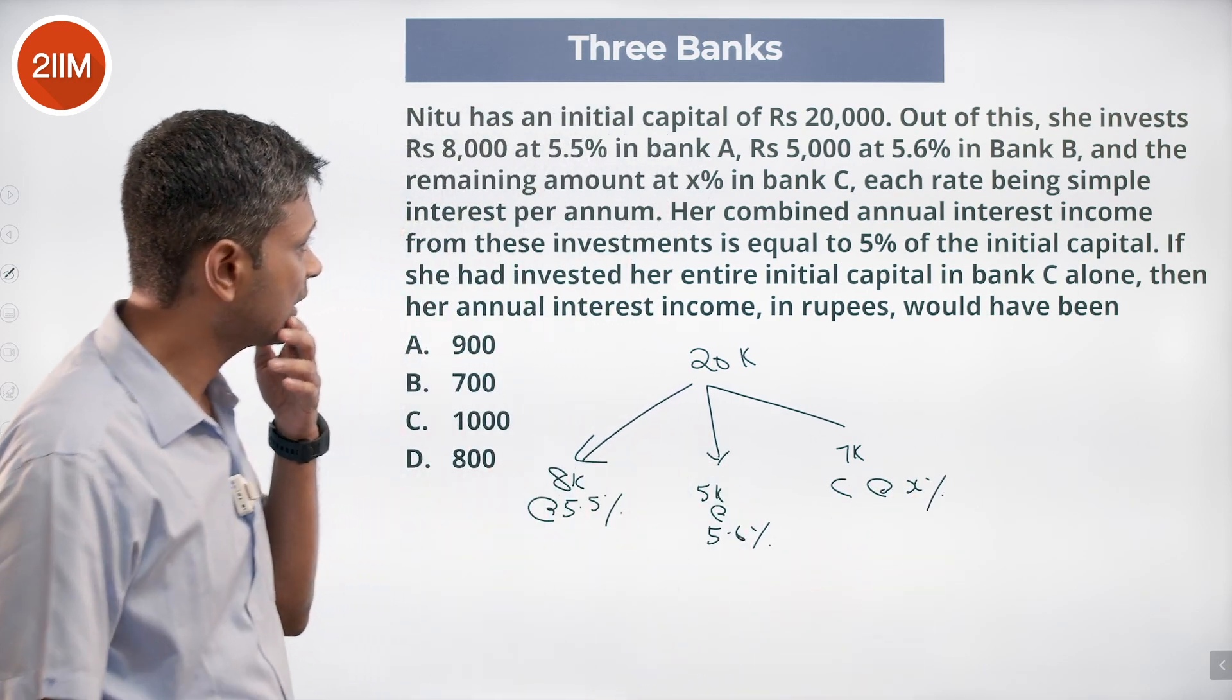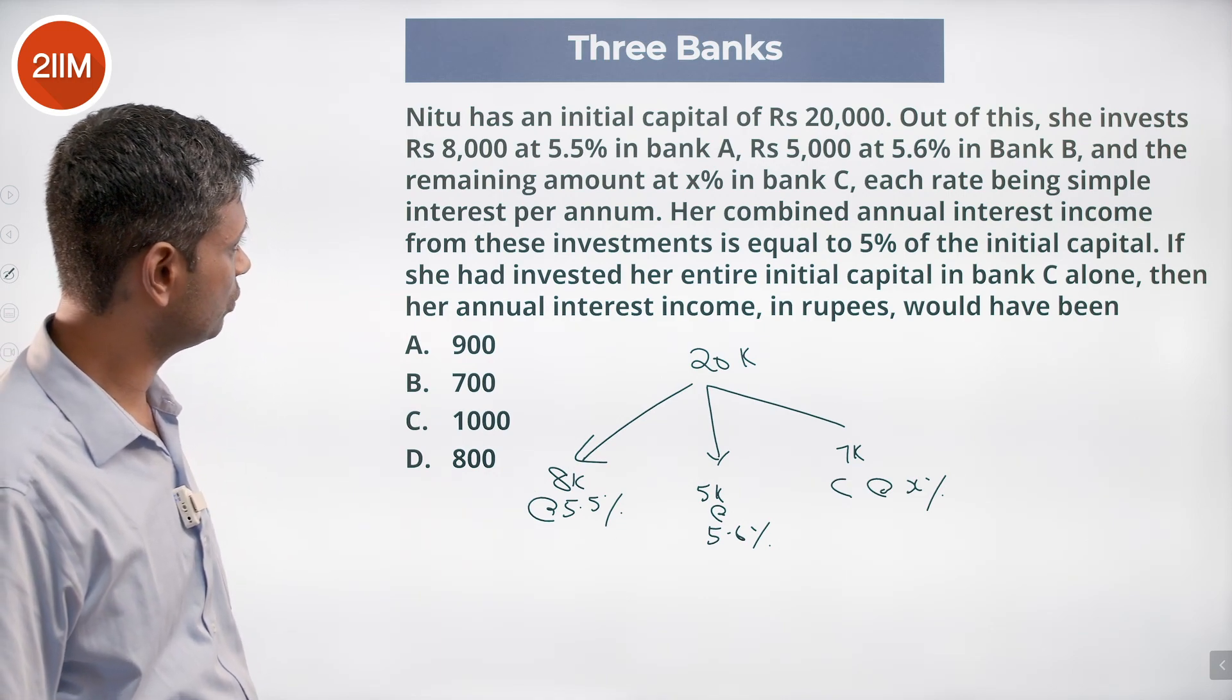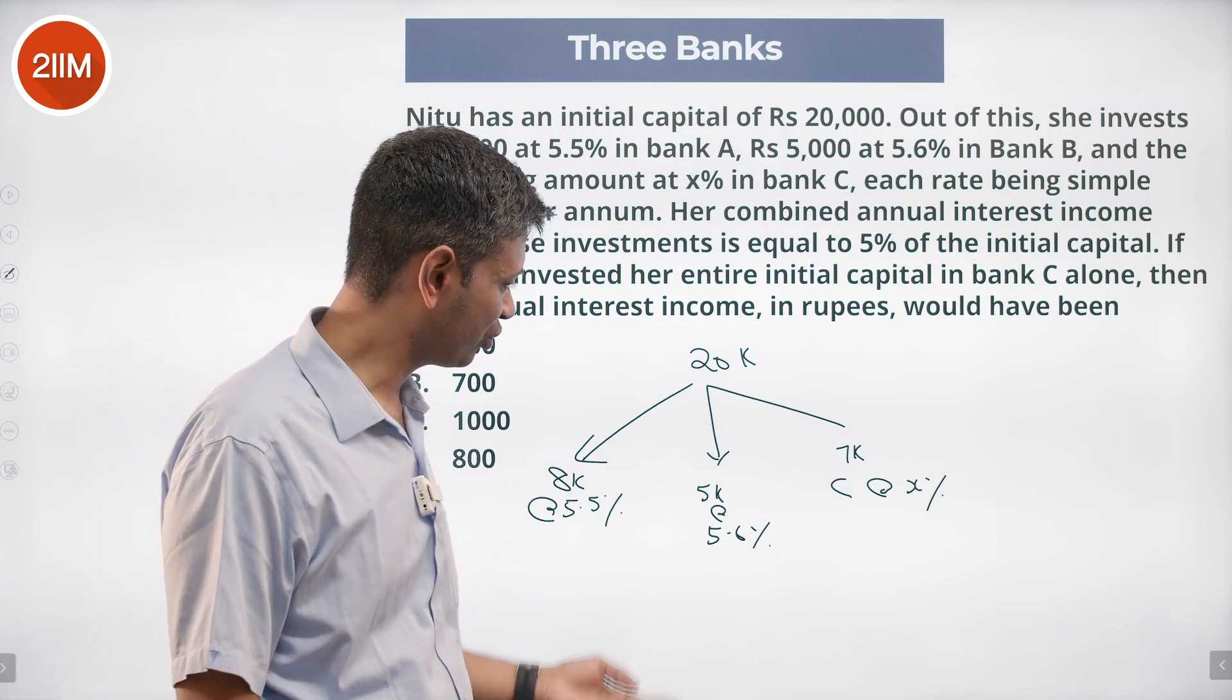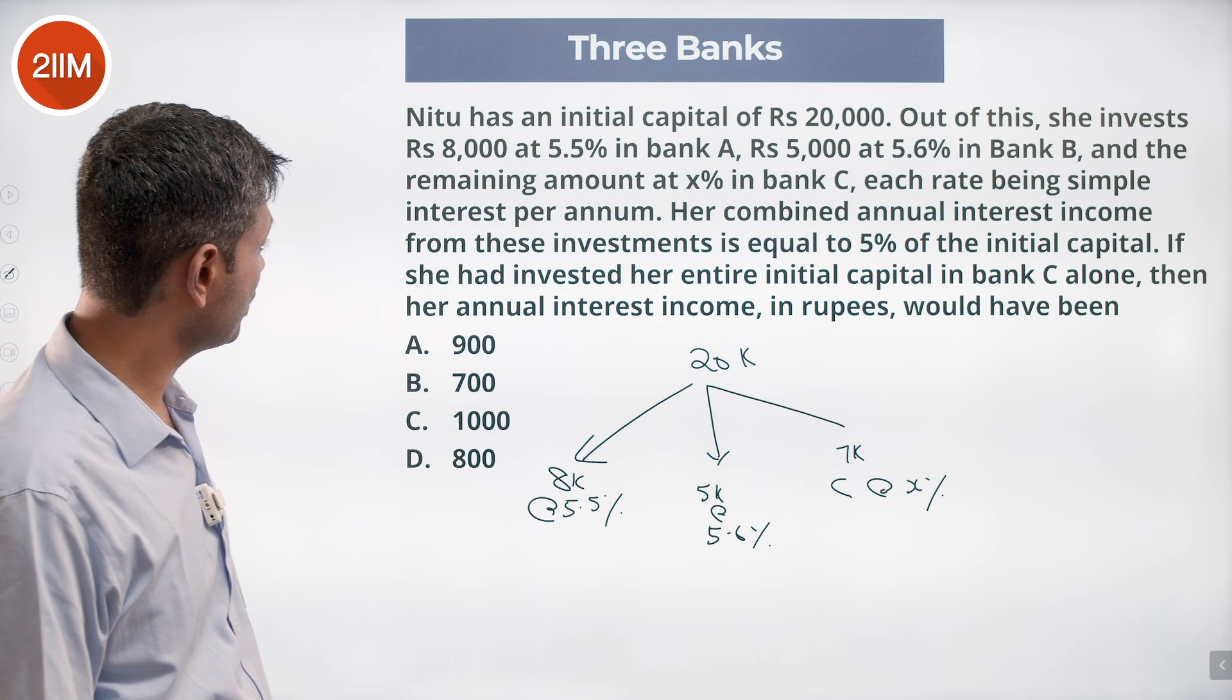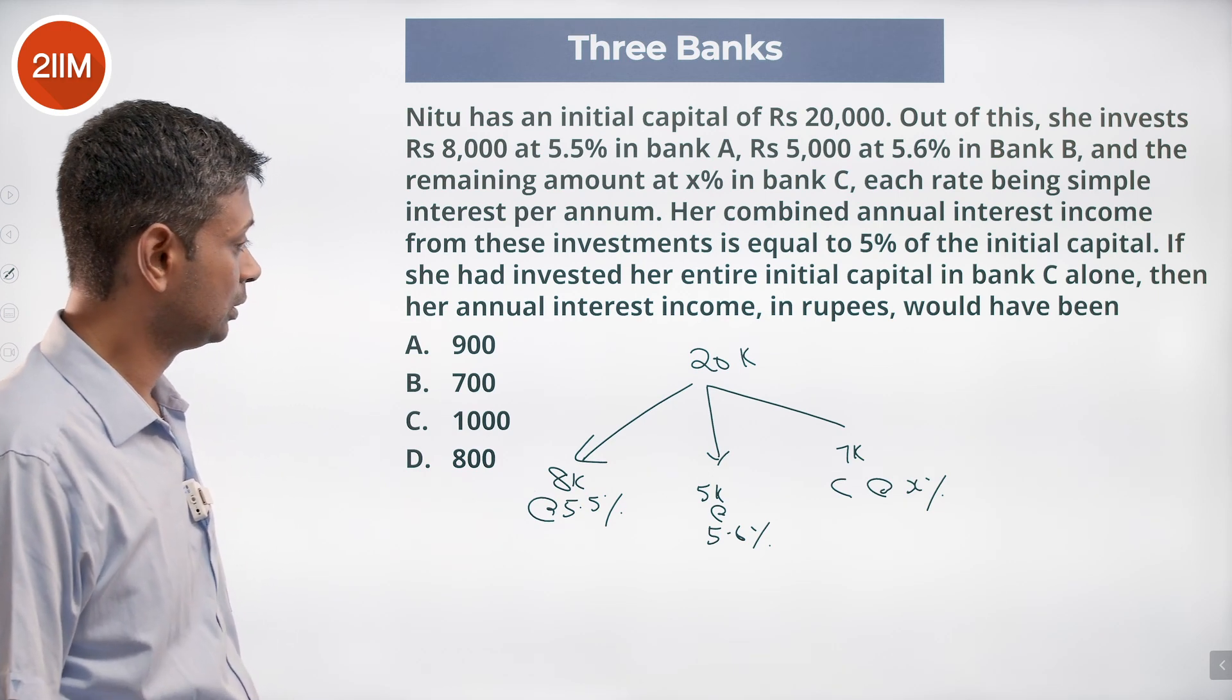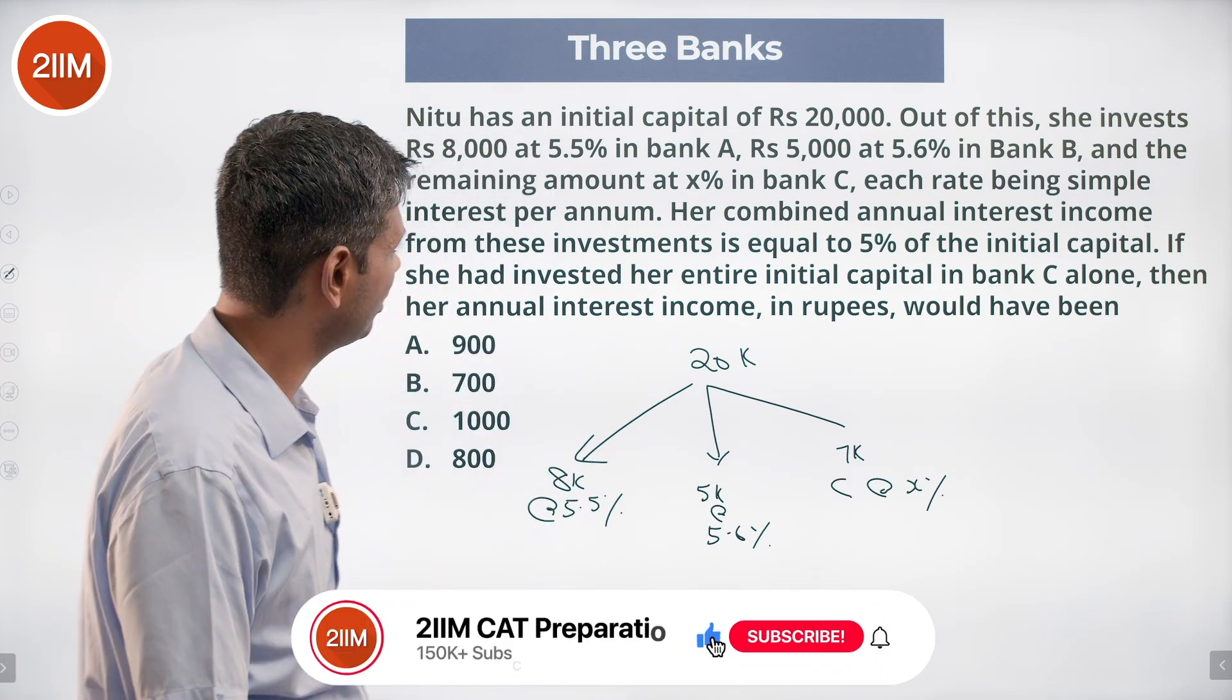Her combined annual interest income from these investments equals 5% of the initial capital. If she had invested the entire capital in Bank C alone, the annual income would have been... So we find this X percent and then we are through. Overall average is 5%.